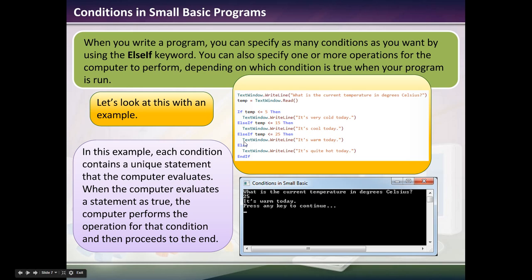Else if temp is less than or equal to 15, then it'll print, it's a cool day. If I entered 38, this statement's false, this statement's false. Else if moves on to the next statement. If the temp is less than or equal to 25, then print, it's a warm day. Else if is a way of saying, if the first statement above is not true, then try this. And when we get to the last one, we use just the word else, because that's the last one. So if I plugged in 29 degrees, this would be false, so I'd move down. This would be false. Else if, move down. If this is false, and this is false, and this is false, my last statement has to be true. So we would just say else, it's quite a hot day, endif. In this example, each condition contains a unique statement that the computer evaluates. When the computer evaluates a statement as true, the computer performs the operation for that condition and proceeds to the end.